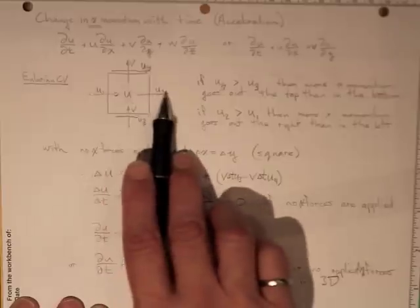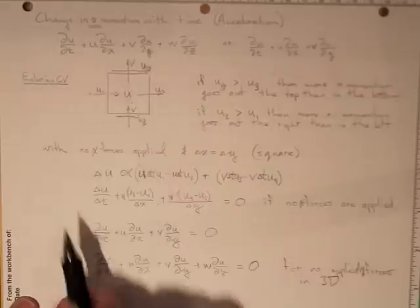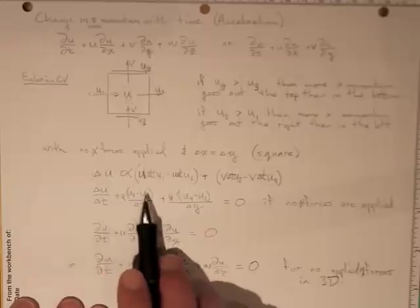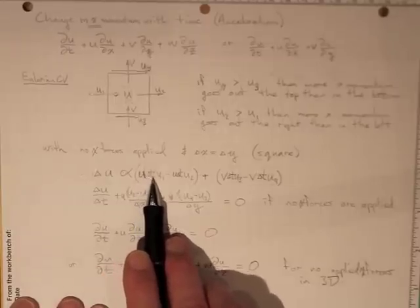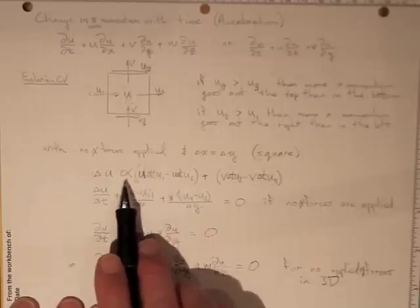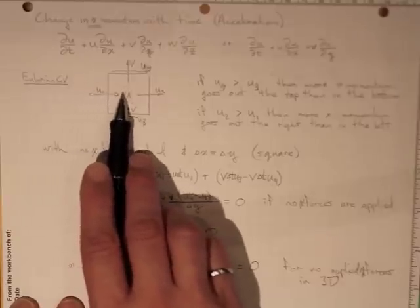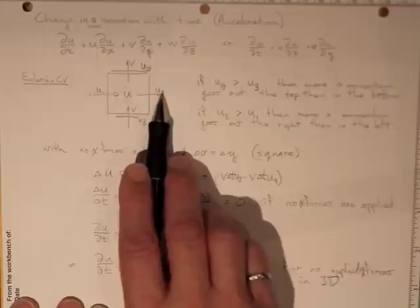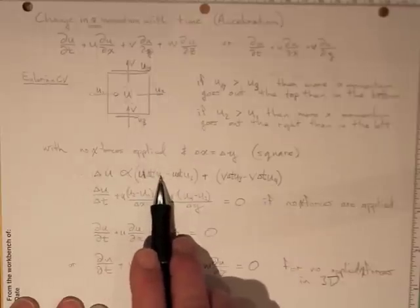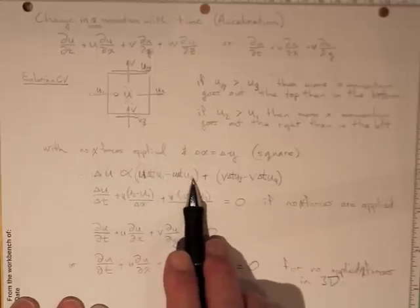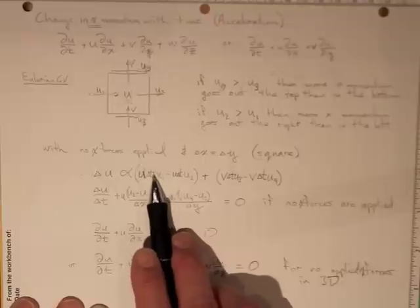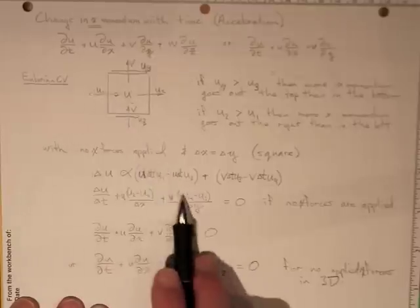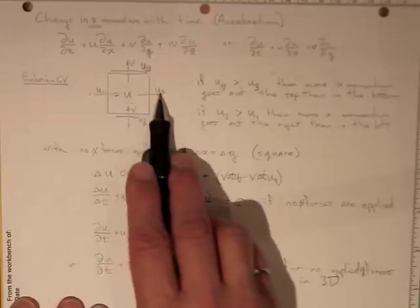So let's do the u-direction faces first, this one and this one. What came in this side? Well, it was the u-velocity times delta t, that's how far the flow went this way, minus the u-velocity times delta t, that's the amount of stuff going out that side, times the velocity that it came in with or went out with. This is the momentum that that flow carried with it. So it comes in with u1 momentum there, goes out with u2 momentum there.